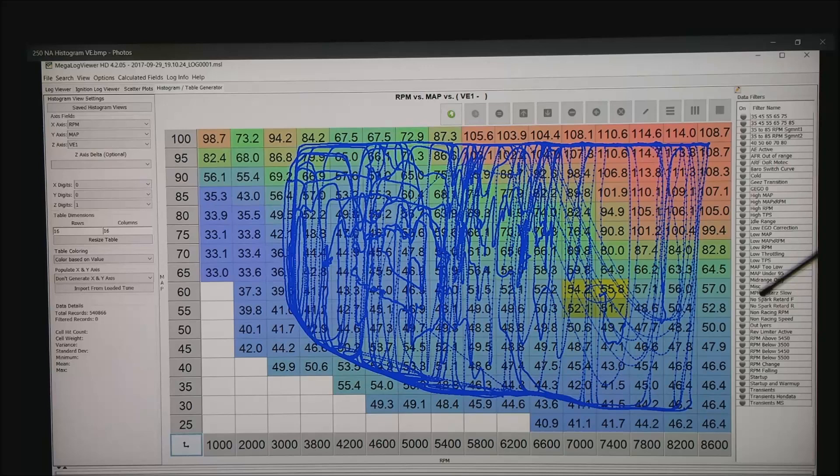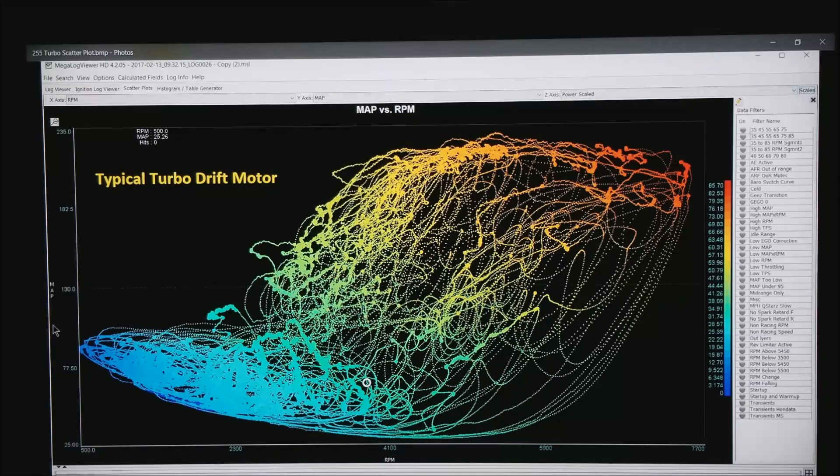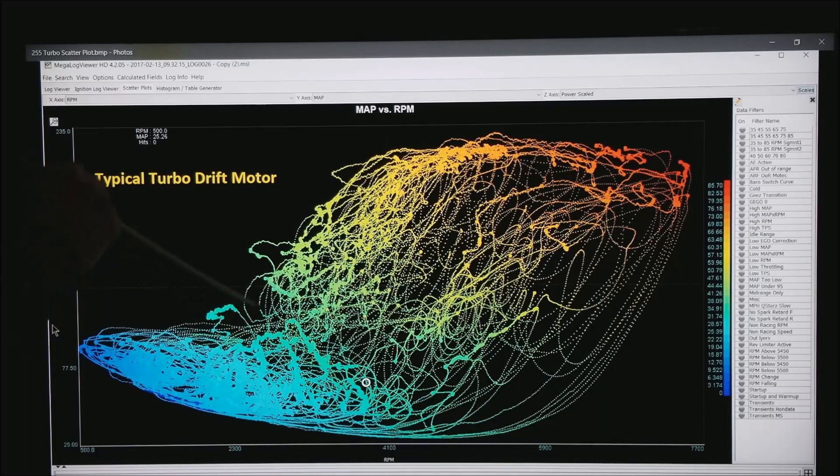It's interesting to note though that there is a very definite range in which this motor can get to. This happens to be the same scatter plot view of a typical turbo drift motor. Notice that below about 2,300 RPM, he virtually cannot get into boost. But once he gets above 2,300, if he's in the throttle, he can get onto boost.